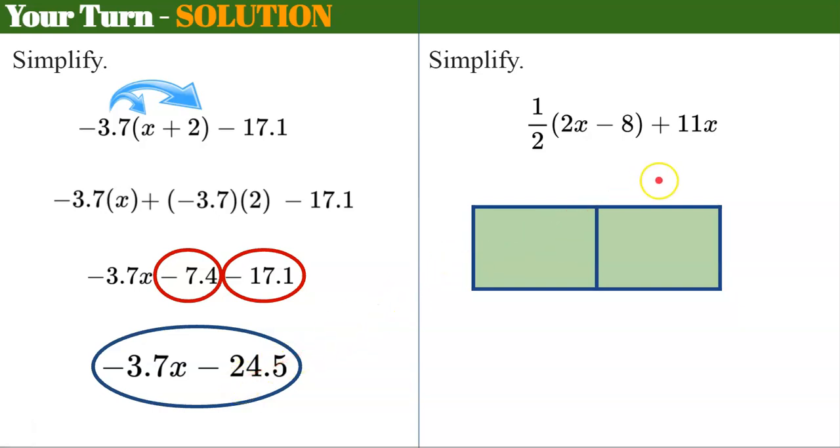Let's do our second one. I'm going to set this up. I'm going to put my 1 half, 2x and negative 8, and not forget that I have to add 11x to the area when I'm done. 1 half times 2x is x. 1 half times 2 is 1. So 1 half times negative 8 is negative 4, and don't forget to add your 11x.